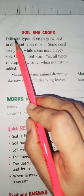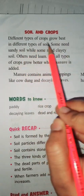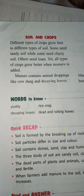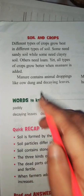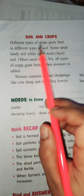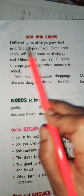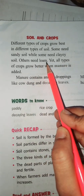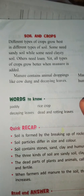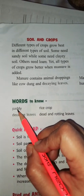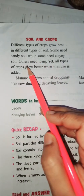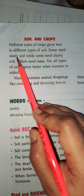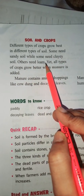Different types of crops grow best in different types of soil. For example, the crop of rice may need a specific soil. Some crops need sandy soil, some need clay soil, and others need loamy soil. Generally, loamy soil is best for most plants, but paddy or rice crops may not grow well in loamy soil.